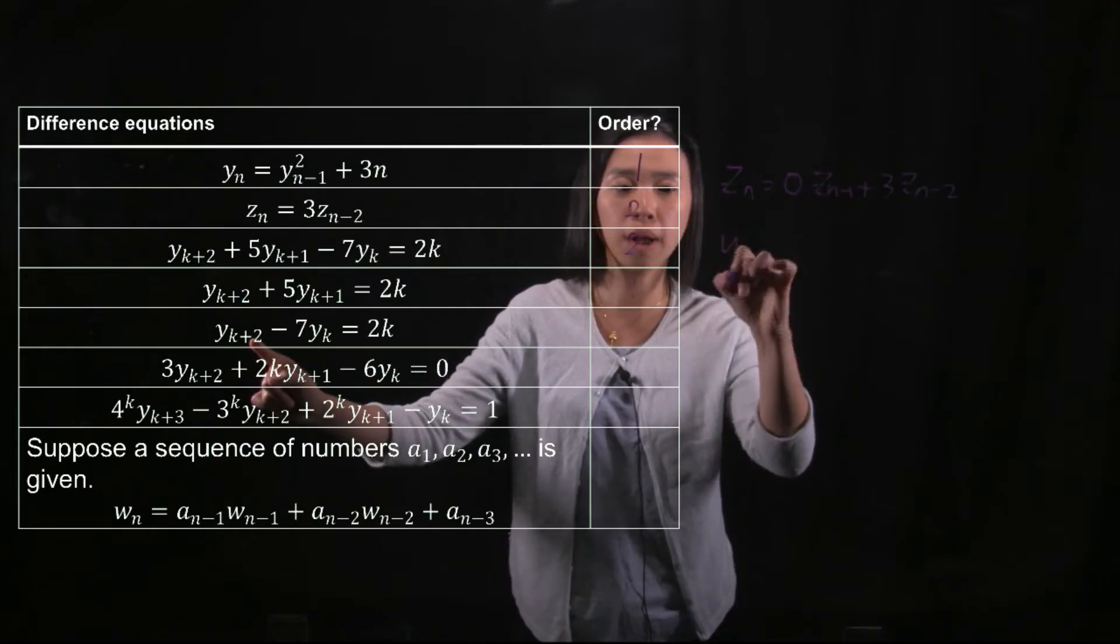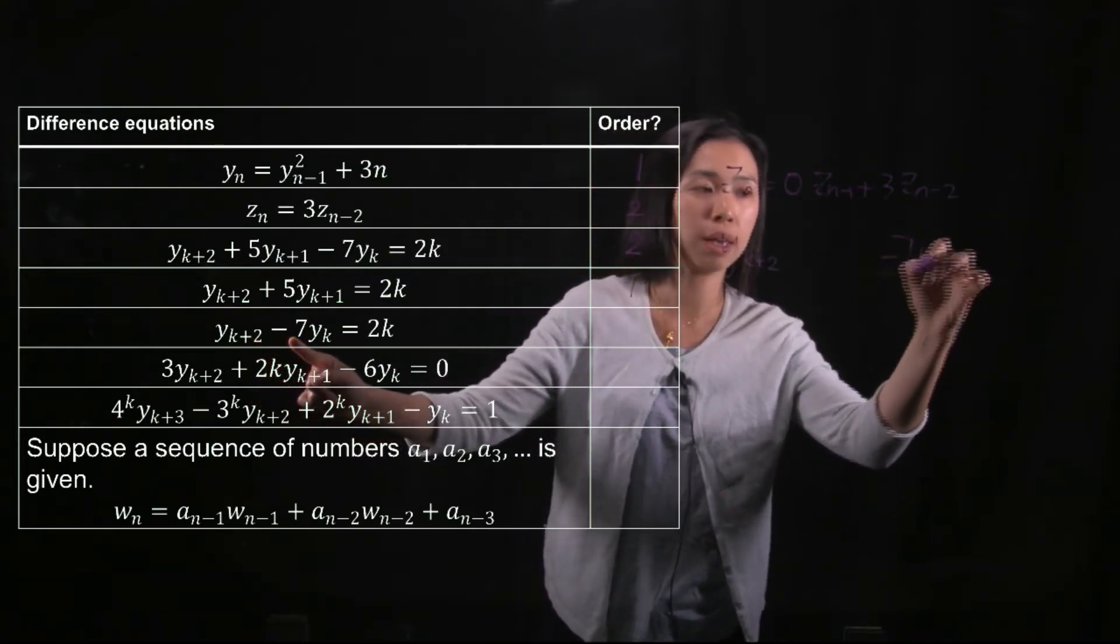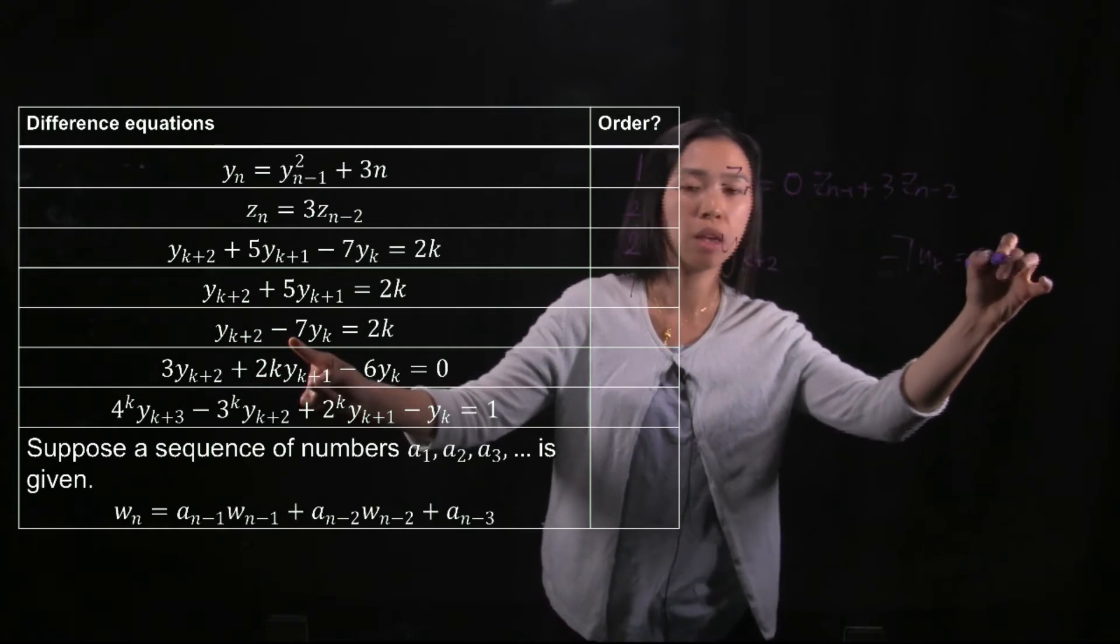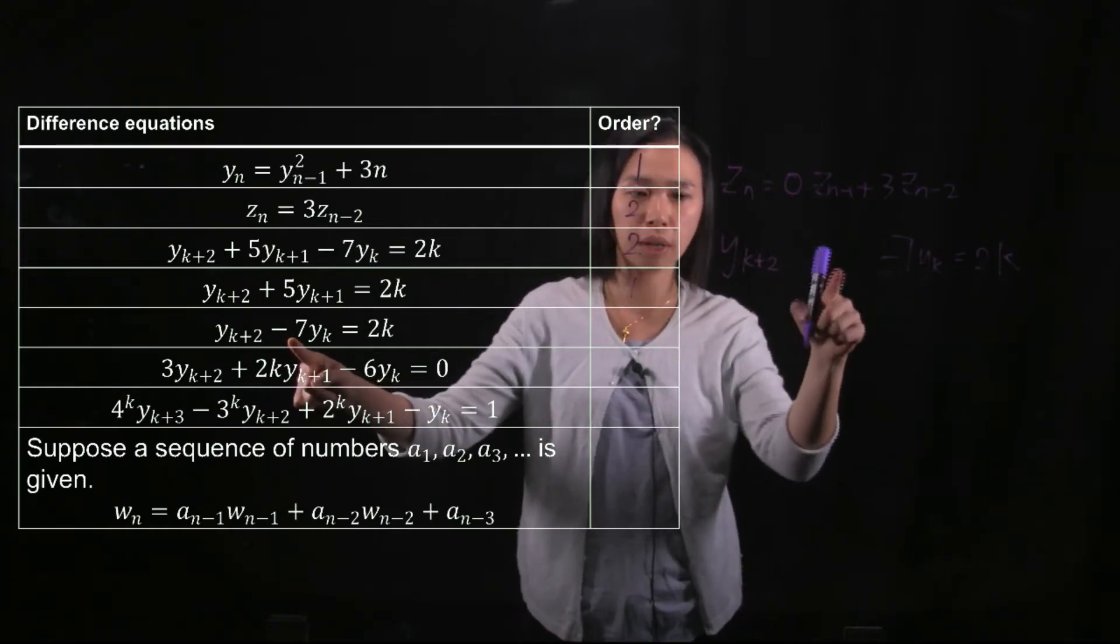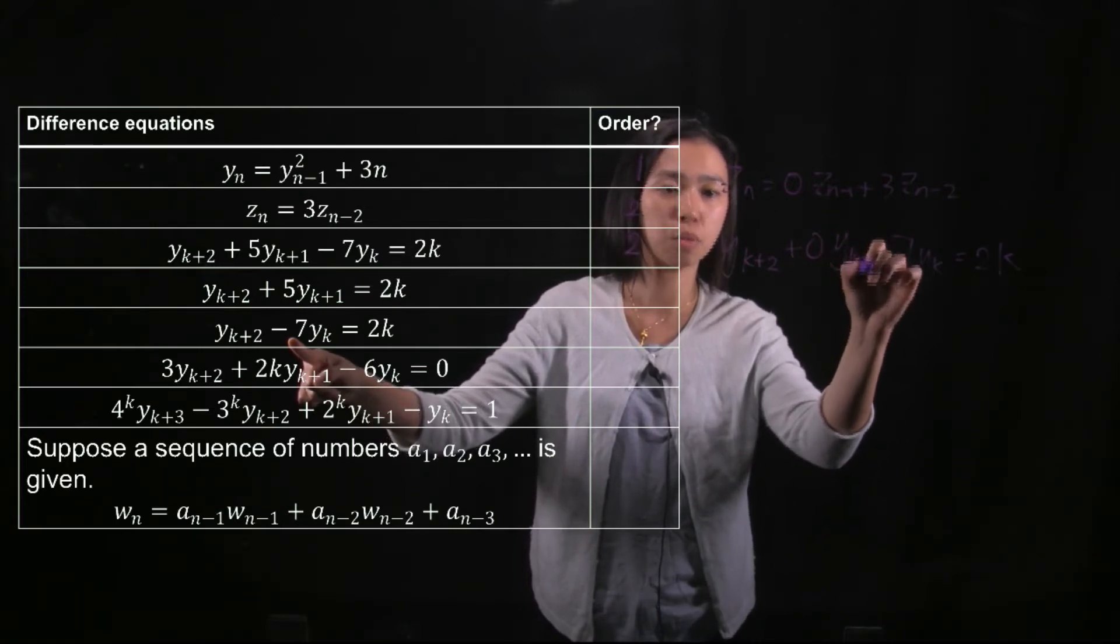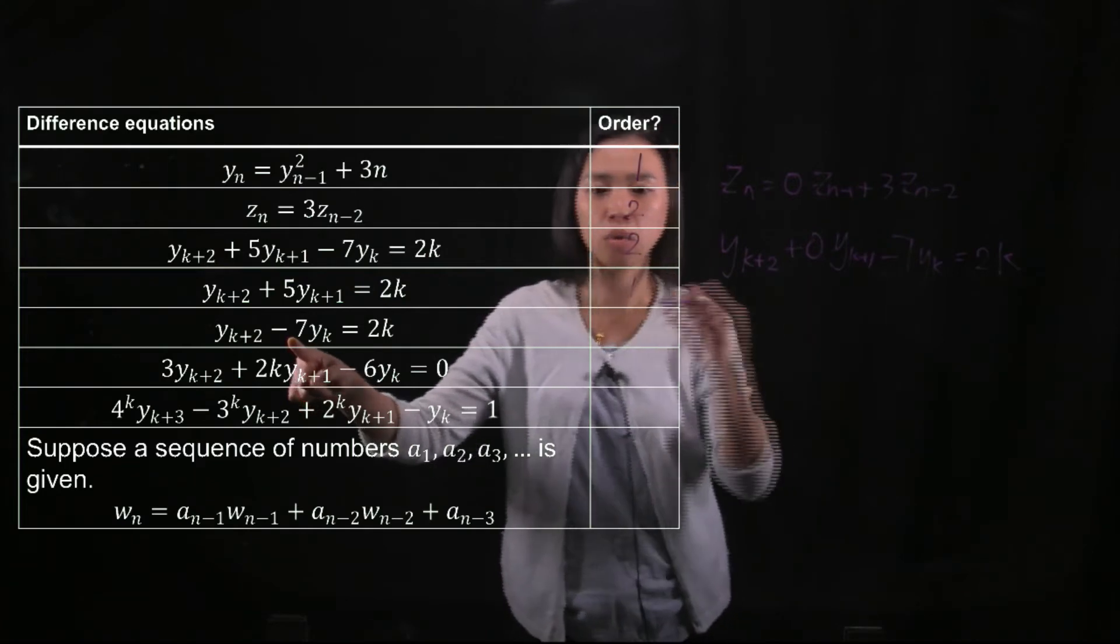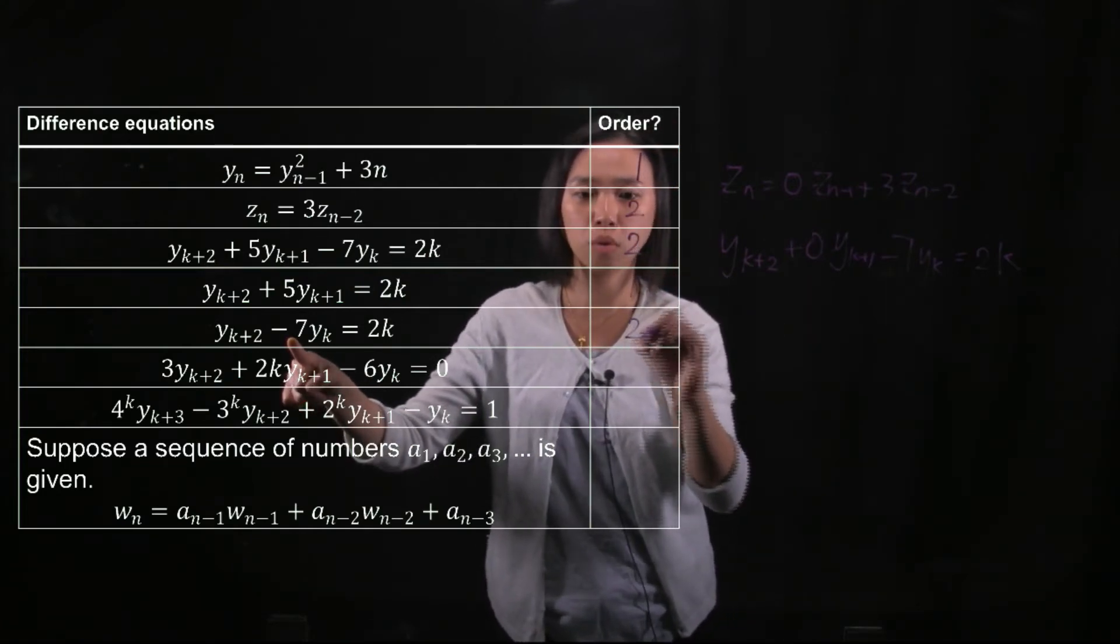So this example, yk plus 2 minus 7yk equals 2k. So you can see here we missed something again. You may fill it in by zero multiplied by yk plus 1. Then you can see that yk plus 2 actually depends on the previous two terms. So you will put down a 2 here.